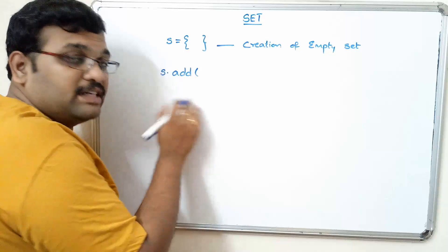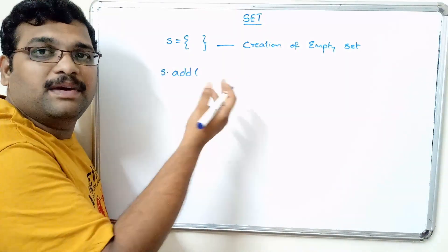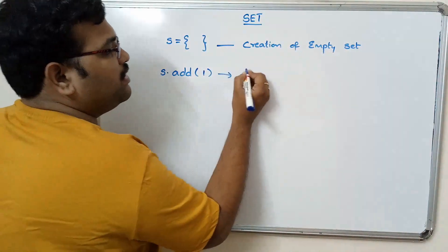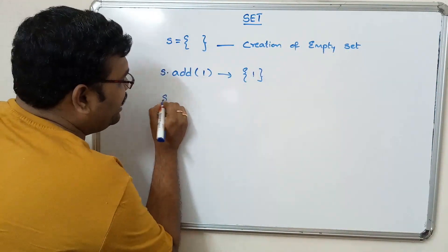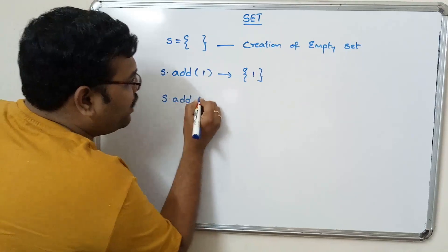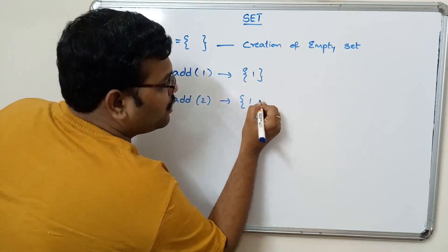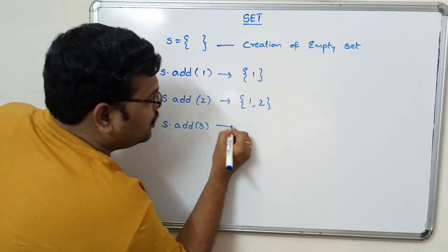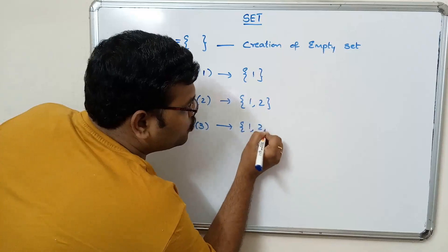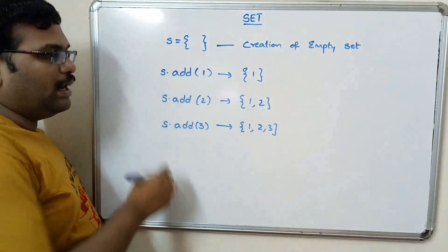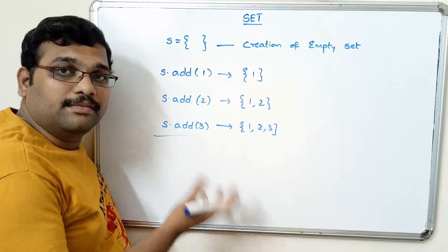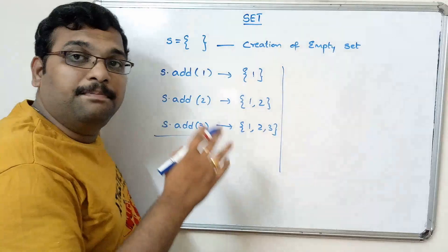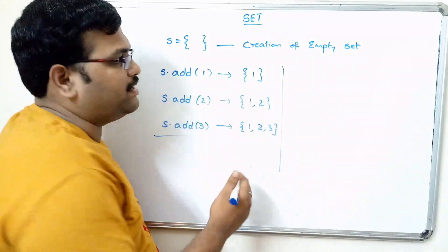The add function takes an argument which is the value to be added. If you call s.add(1), the result will be {1}. Again if you call s.add(2), the result will be {1, 2}. And if you add more elements, the set grows accordingly. This is how we can add elements into a set one by one.